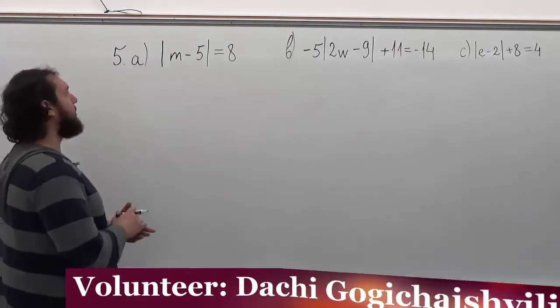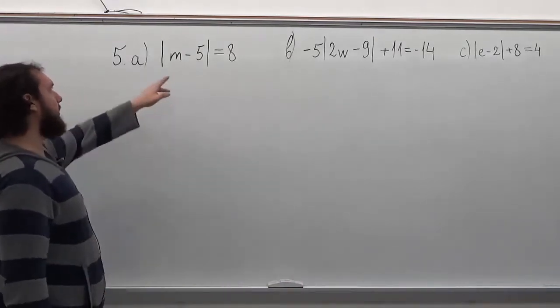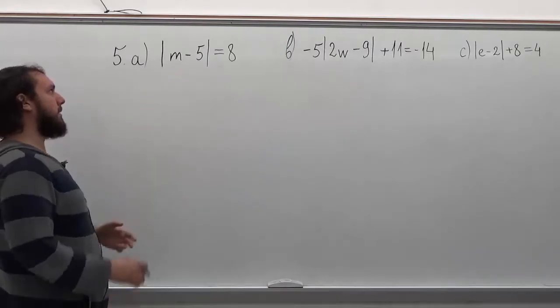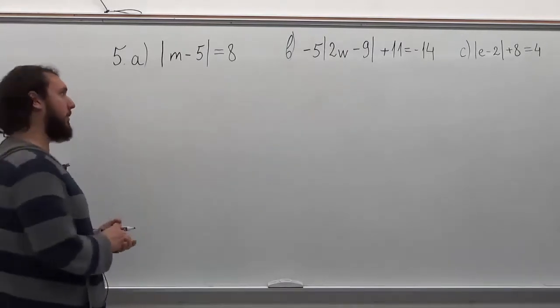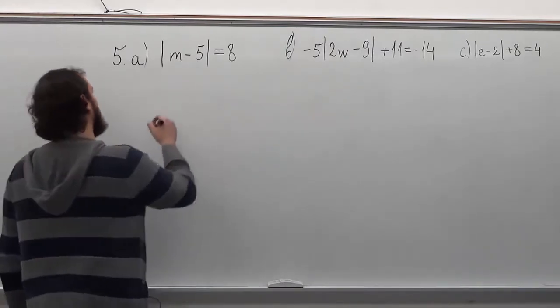In the first problem, we must remember that whatever is in the absolute value brackets can be either a negative or a positive. So we can rewrite this problem into two parts.